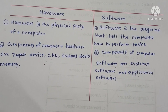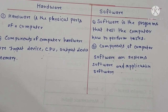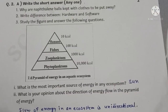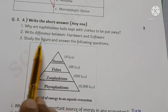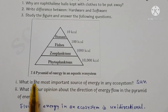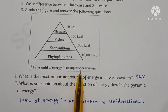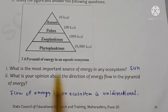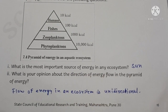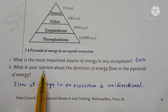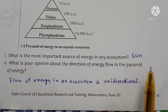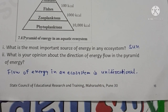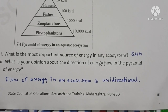Next, look at the figure of the pyramid of energy in an aquatic ecosystem and answer the following questions. First, what is the most important source of energy in an ecosystem? The sun is the most important source of energy. Second, what is the direction of energy flow in the pyramid of energy? The flow of energy in an ecosystem is unidirectional — it is a one-way flow.